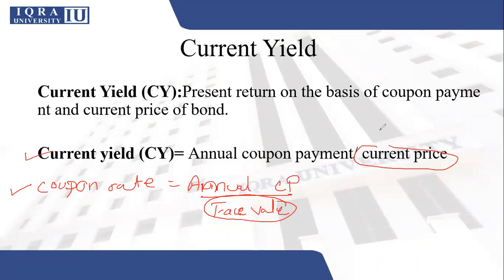If the investor wants to purchase the bond today, he will have to purchase it at the current price. The annual coupon payment is the return he will get in the first year after purchasing the bond. So current yield tells you the return the investor will get right now — the current price is his investment and the coupon payment is his return. However, current yield is not a measure of the total return that the investor will get from the bond.